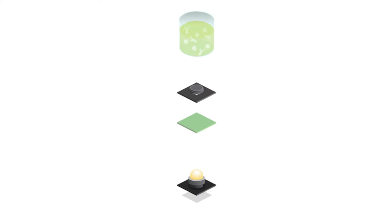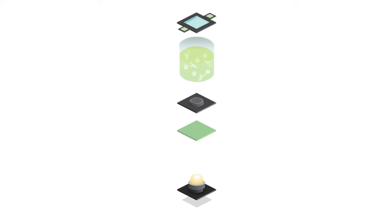A spectrophotometer is an instrument used to measure the intensity of light at a particular wavelength in the visible spectrum. This type of instrument can be used in the clinical laboratory to determine the concentration of a substance in solution by measuring the amount of light either transmitted or absorbed when a beam of light is passed through a sample reaction at a specific wavelength.